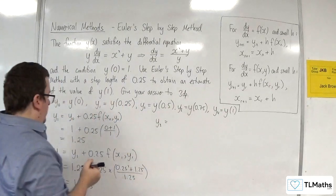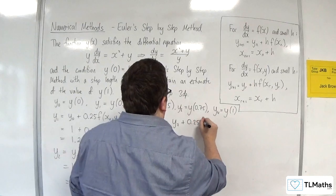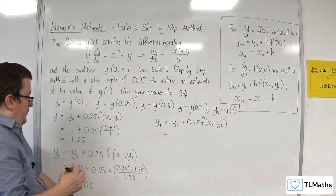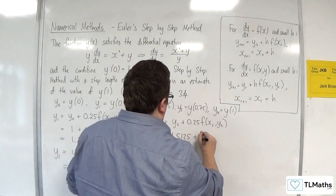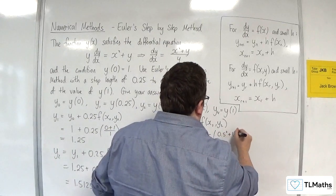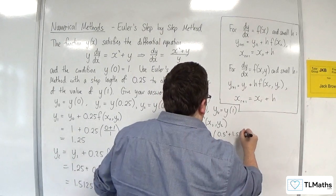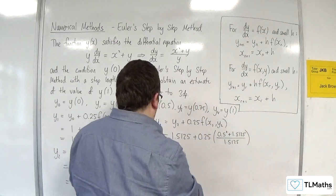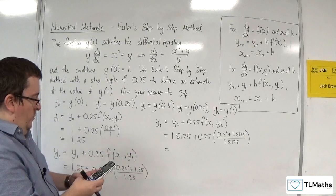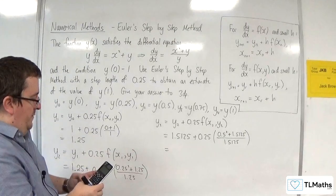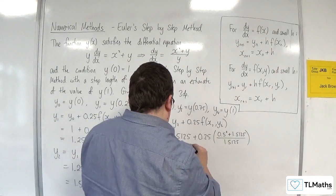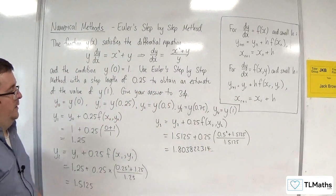y₃ is going to be equal to y₂ plus 0.25 times f of x₂, y₂. So y₂ is the 1.5125. So x₂ is the 0.5, so we're going to have 0.5 squared plus 1.5125 over 1.5125. So 1.5125 plus 0.25 times 0.5 squared plus 1.5125 over 1.5125.